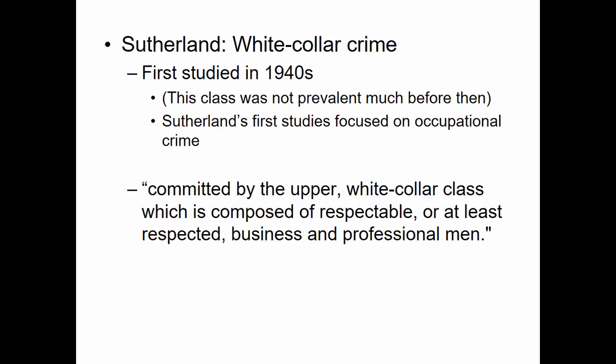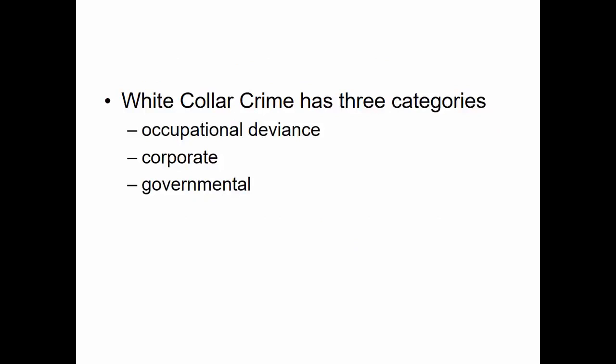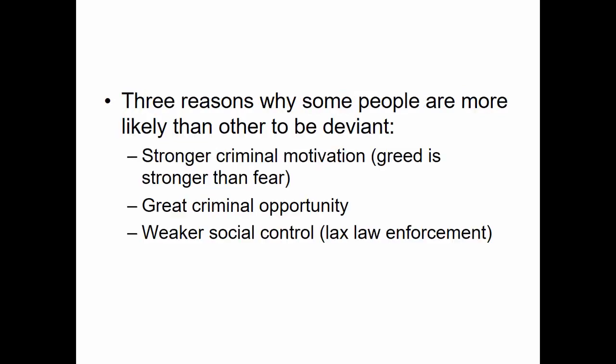Just to reiterate in case this isn't utterly clear, white-collar crime is crime that happens effectively in business. Occupational crime is crime that is committed when people do it as part of the job. White-collar crime has three categories: occupational deviance, corporate deviance, and governmental deviance.